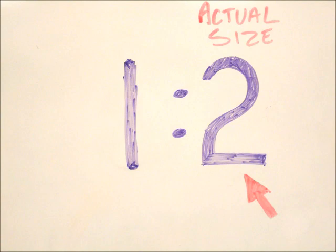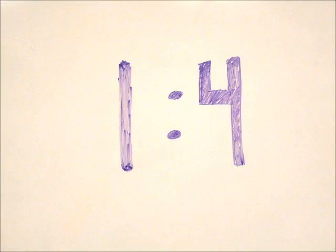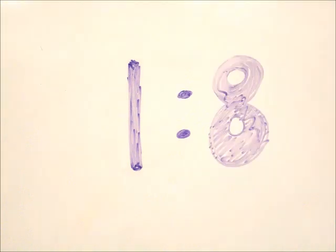This is half scale, meaning that every 1 inch on the paper represents 2 inches in real life. This is double scale, meaning that every 2 inches on the paper represents 1 inch in real life. There are many different scales that we could use in our drawings, and the notations work the same for all of them.